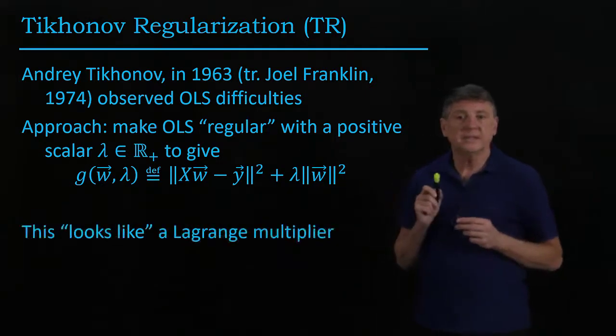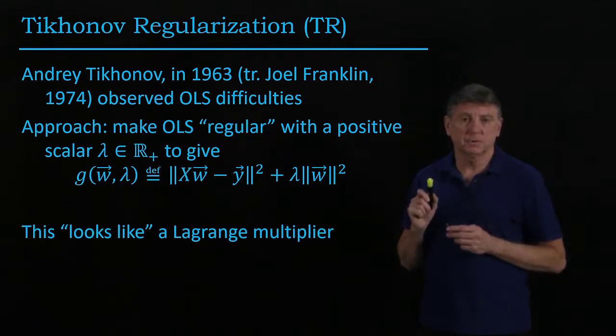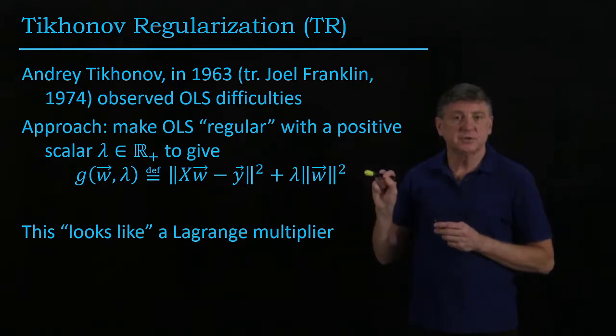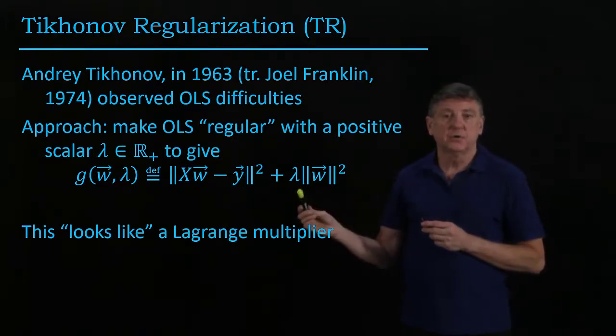Now, this looks like a Lagrange multiplier. The difference is this is not a Lagrange function. This is an objective function, and the difference is you're given lambda.